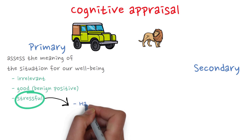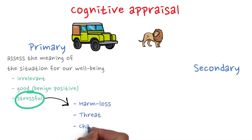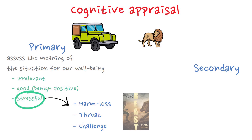Possible implications are harm/loss, threat, and challenge. Harm/loss refers to the amount of damage that has already occurred. In our case, let's say the lion has already reached the jeep and bitten off one of our legs — that could be considered harm. Next, threat involves the expectation of future harm. So let's say at this point the lion is walking toward our jeep — that would be considered a threat. Finally, challenge is the opportunity to achieve growth, mastery, or profit by using more than routine resources to meet a demand. In our case, if we decide to fight the lion like Idris Elba in the movie Beast, that could be considered a challenge.